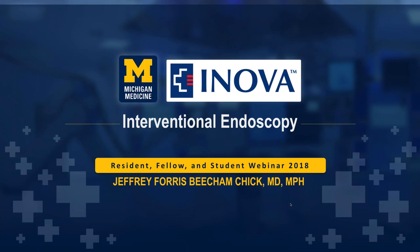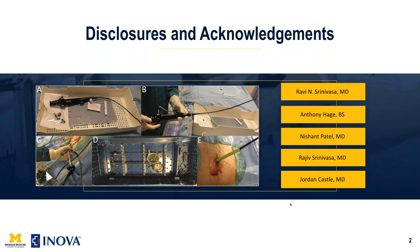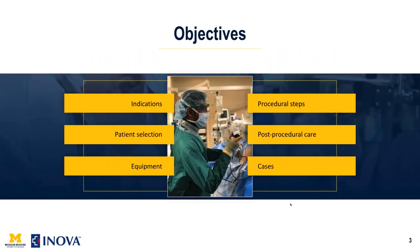I'm going to talk about the general overview of endoscopy, some of the equipment, some of the uses, and show some cases — some things that Ravi and I have done that are a little more obscure. Afterwards, Ravi will talk about biliary endoscopy, which is the more common practice. My goals tonight are to cover indications for endoscopy, patient selection, equipment that can be borrowed or purchased, general steps for interventional endoscopy, post-procedural care, and case examples.